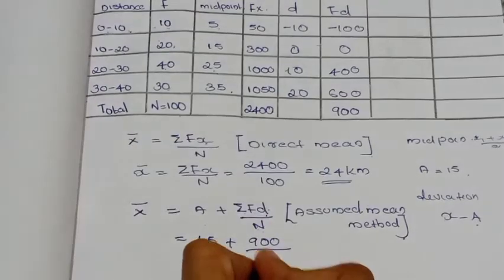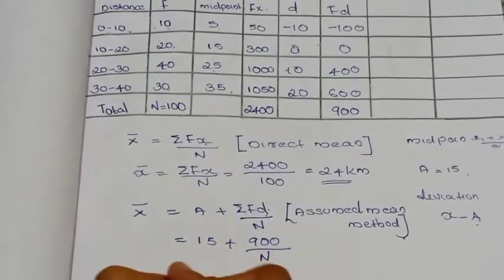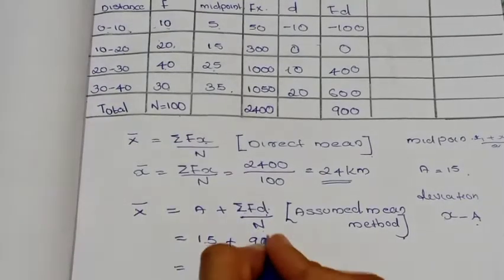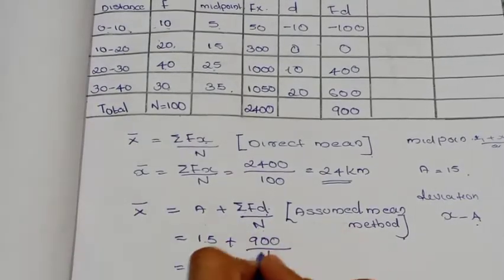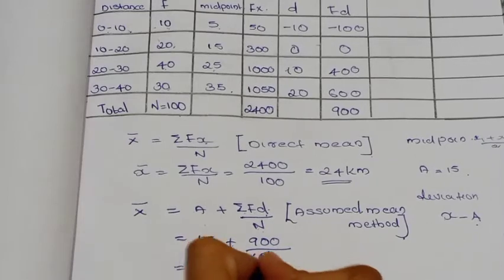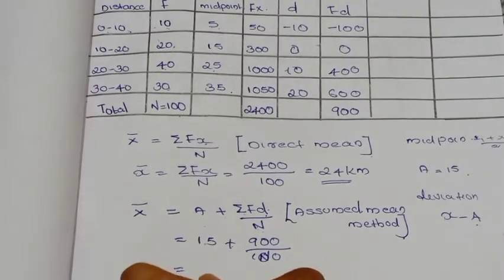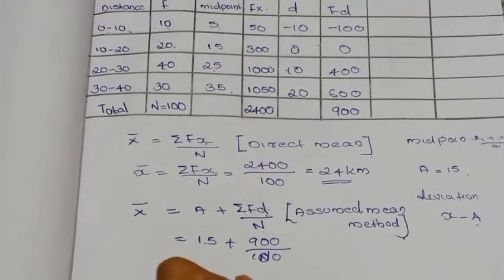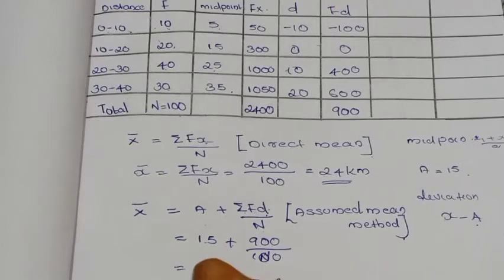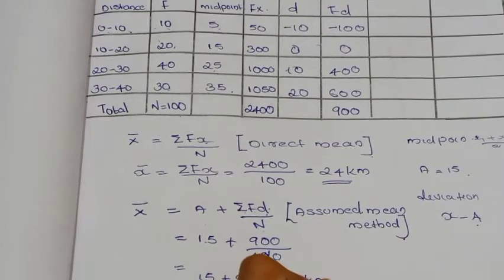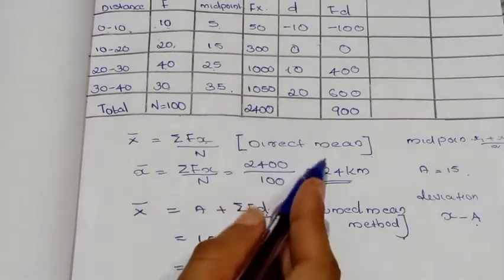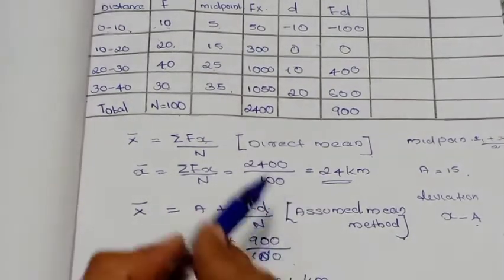The total frequency f is 100. The mean equals A plus sigma fd divided by n, which is 15 plus 900 divided by 100 equals 15 plus 9 equals 24. So the mean is equal to 24.